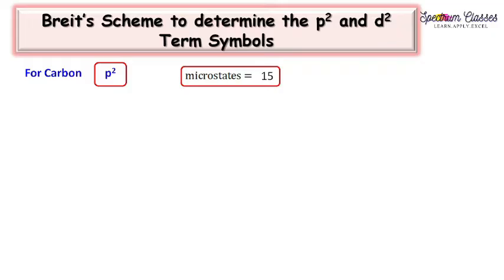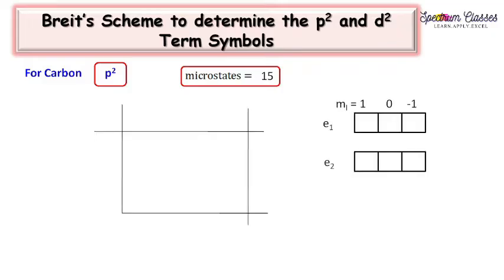Through this BRITS scheme, we will see how one can write the term symbols for P2 and D2 configurations. It is easy but a little tricky. Let's start with the P2 configuration.